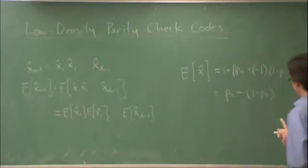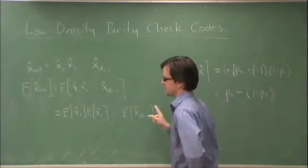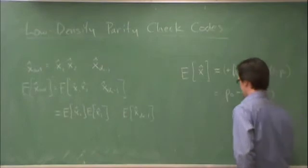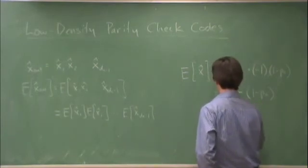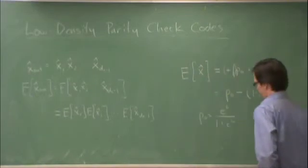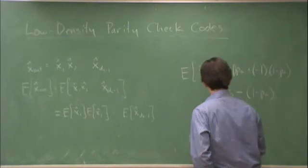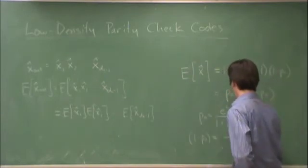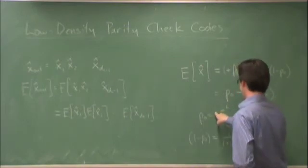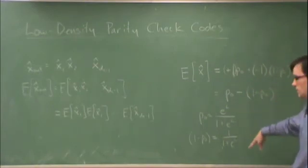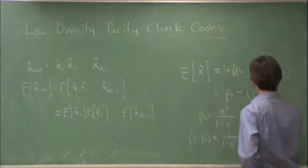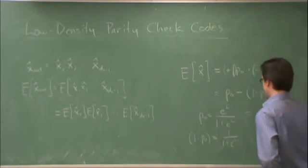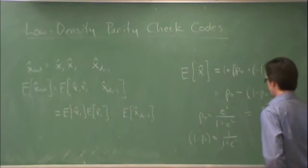Now, we know that the log likelihood ratio, from the log likelihood ratio, which is the message that's available to us for passing messages in the form of log likelihood ratio, we know that p0 is equal to e to the l divided by 1 plus e to the l. So therefore, 1 minus p0 is equal to 1 over 1 plus e to the l. What I have is 1 plus e to the l minus e to the l divided by 1 plus e to the l is 1 over 1 plus e to the l. So therefore, what I get is that this is equal to e to the l minus 1 divided by 1 plus e to the l.